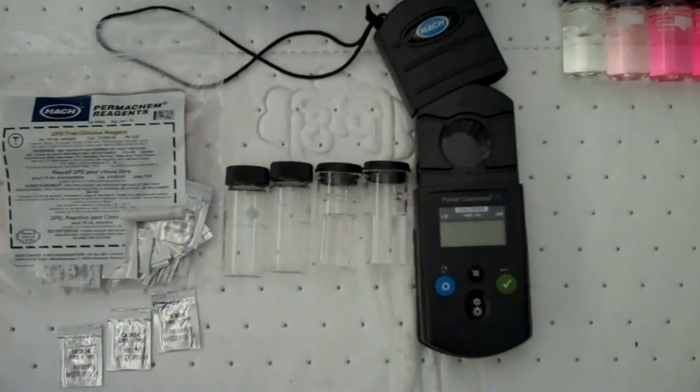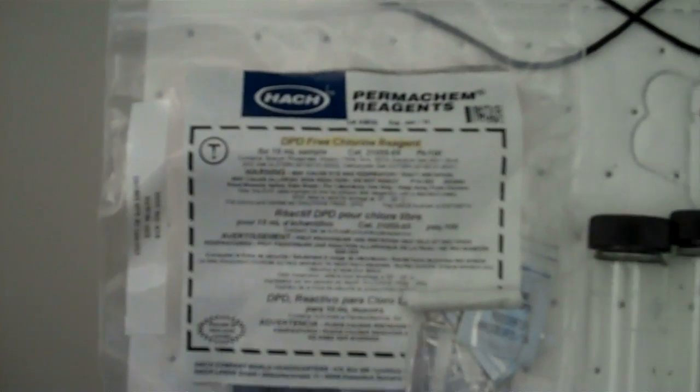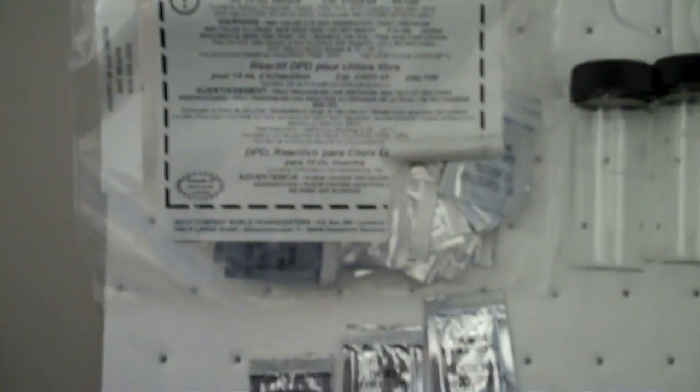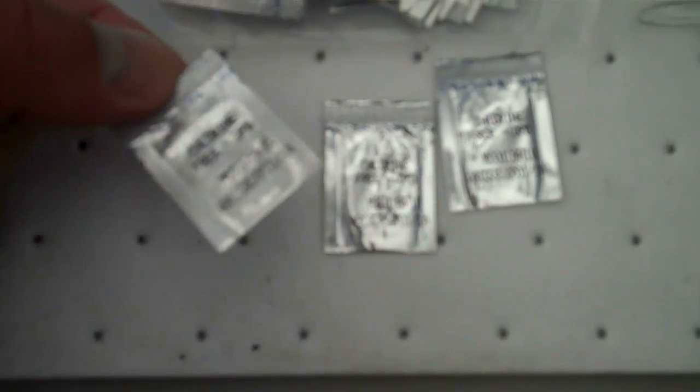I've taken most of the stuff out of the box. As you can see, here are the free chlorine, what they're called pillows, which have the DPD reagent, these little pillows here which would be used for each particular vial to test for free chlorine.